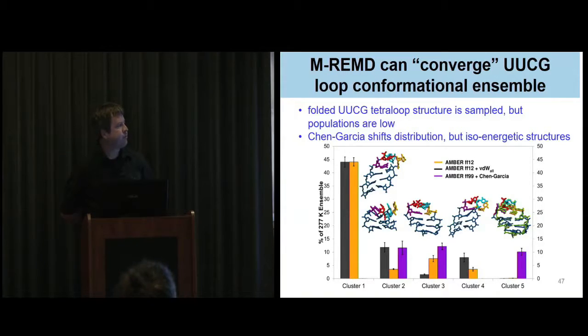We also can converge the tetraloop. Unfortunately, the conformation on the right there, cluster five, that's the correct experimental geometry, and you can see the bars are pretty low for most of the force fields in AMBER, with the exception of this modified one by Chen Garcia. Even the Chen Garcia, the blue bars, shows effectively iso-energetic between three different conformations that are populated. The other conformations that are shown there, other than the experimental, are not seen in experiment at all. We have hundreds of structures of the UUCG tetraloop that are all essentially very close to one other. So those are anomalous structures that are representative of misbalance and force field issues.